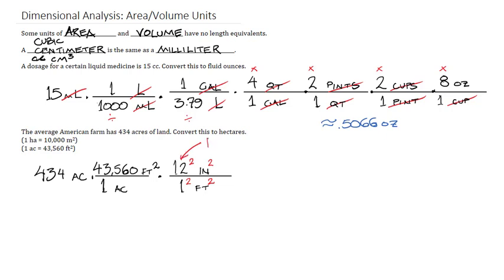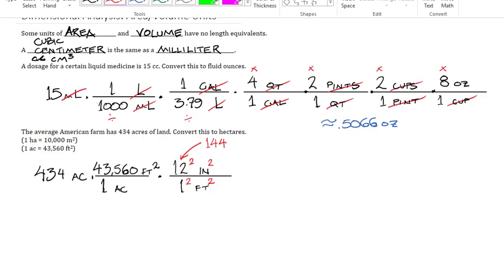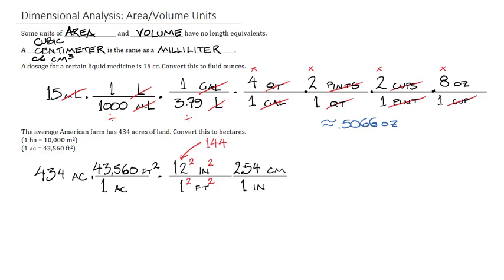12 squared is 144. And we continue in this vein. We will now convert inches into centimeters for the same reason. And in the same manner, we square everything yet again. Here we get 6.4516. And now that we have square centimeters, we just need to convert that back into hectares.